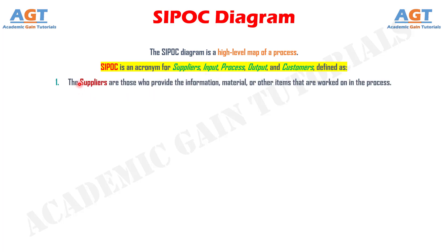Number 1: The suppliers are those who provide the information, material, or other items that are worked on in the process. Number 2: The input is the information or material provided.